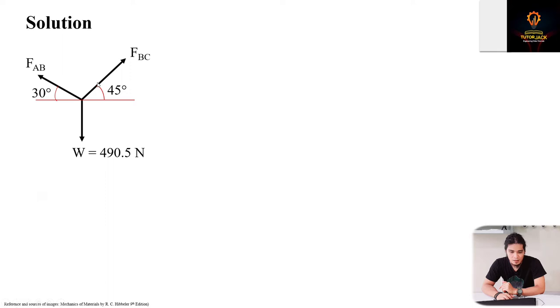First we use statics. This is the free body diagram with the angles of the two forces with respect to the horizontal. W is 490.5 newtons. For equilibrium at a particle, if you recall from statics, there's no moment because these are concurrent forces - they all meet at one point, meaning no moment or rotation. We can use equilibrium in translation, summation of forces along x and y.